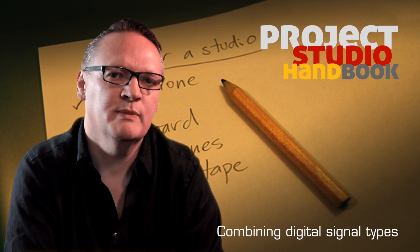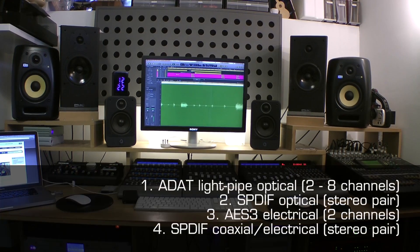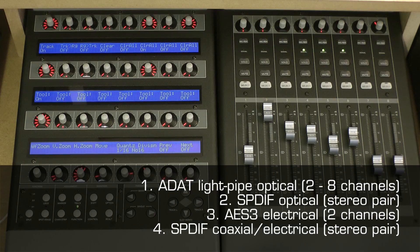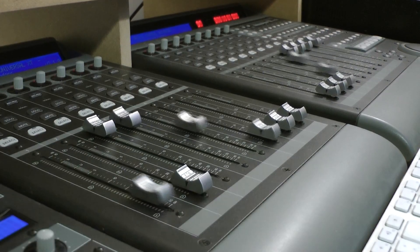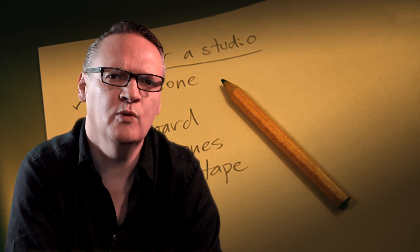In this tutorial we have talked about four primary types of digital audio signal. An interconnected system can utilise all these signal types simultaneously, providing they share the same sample rate. It is also good practice to set them all to a 24-bit word length.